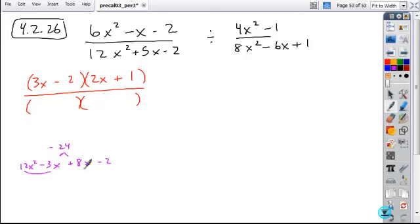Drop my first and last term down and factor by grouping. I'm going to take a 3x out, leaving 4x minus 1. Take out a 2, leaving 4x minus 1. So here's my common binomial factor, 4x minus 1. My remaining factors of 3x and plus 2 are going to form the terms of my remaining factor.